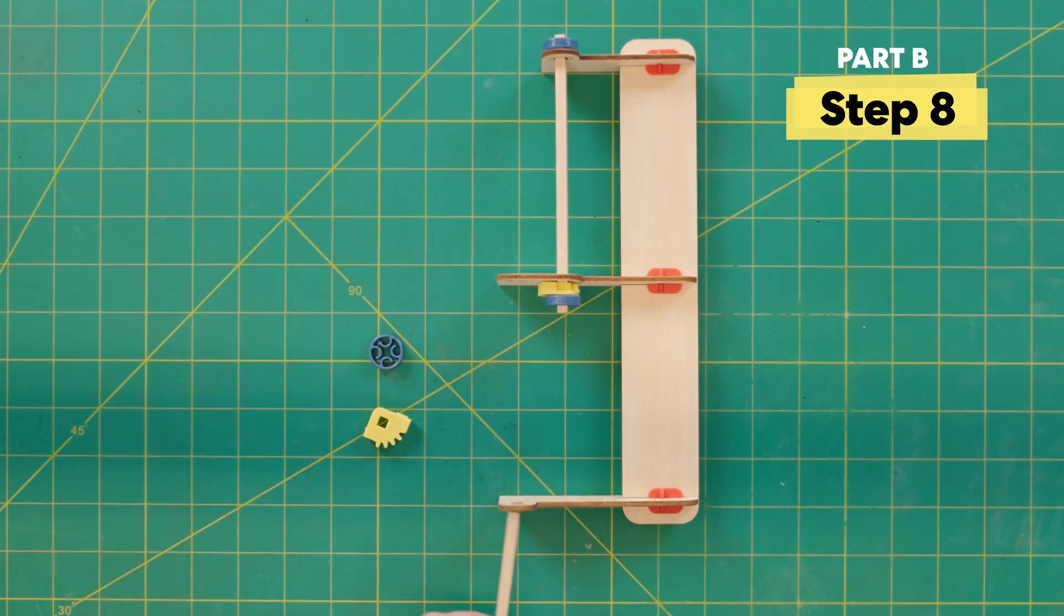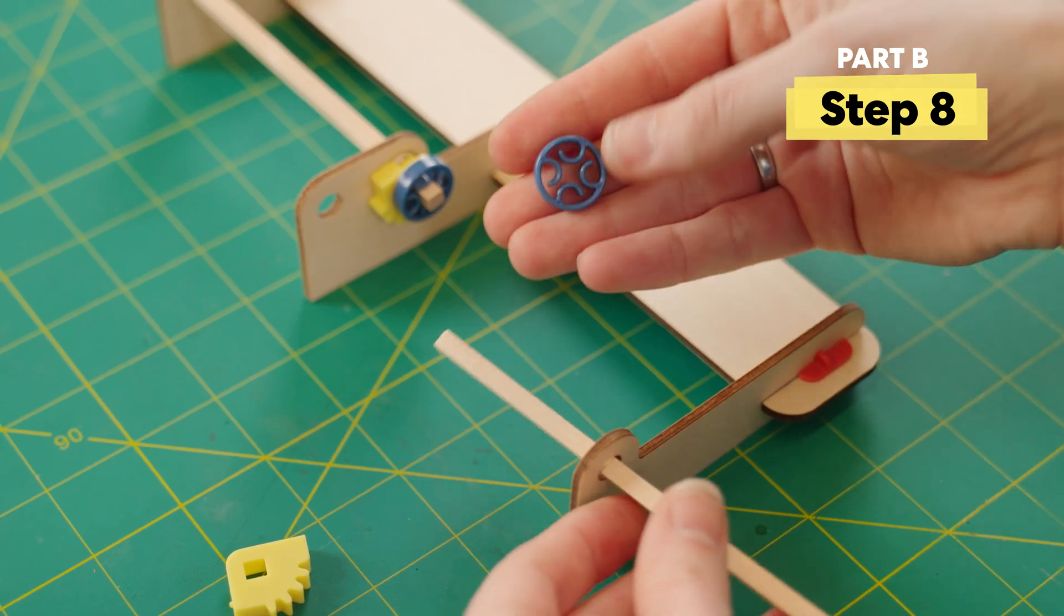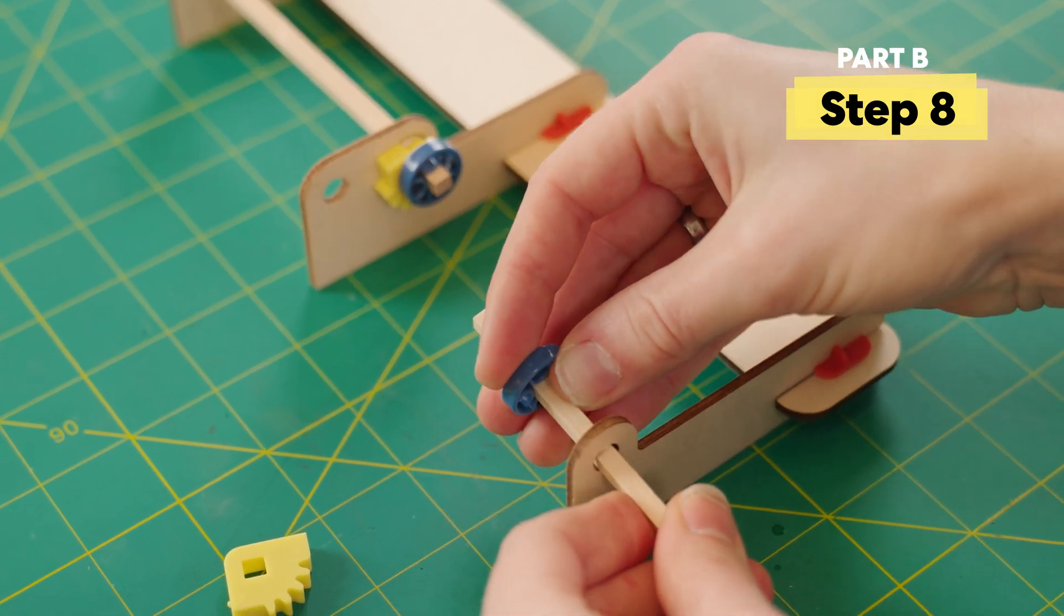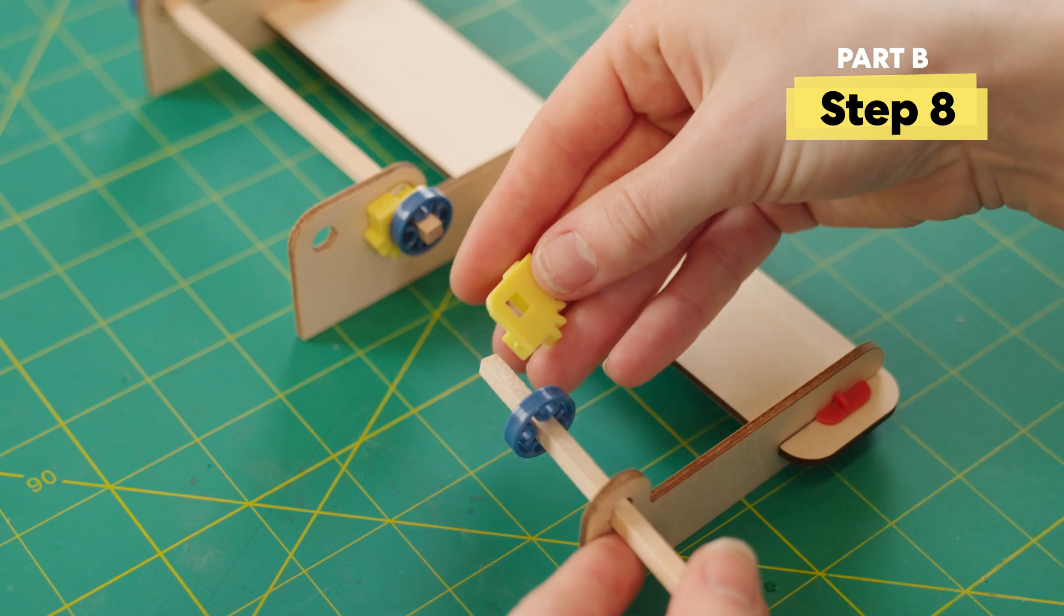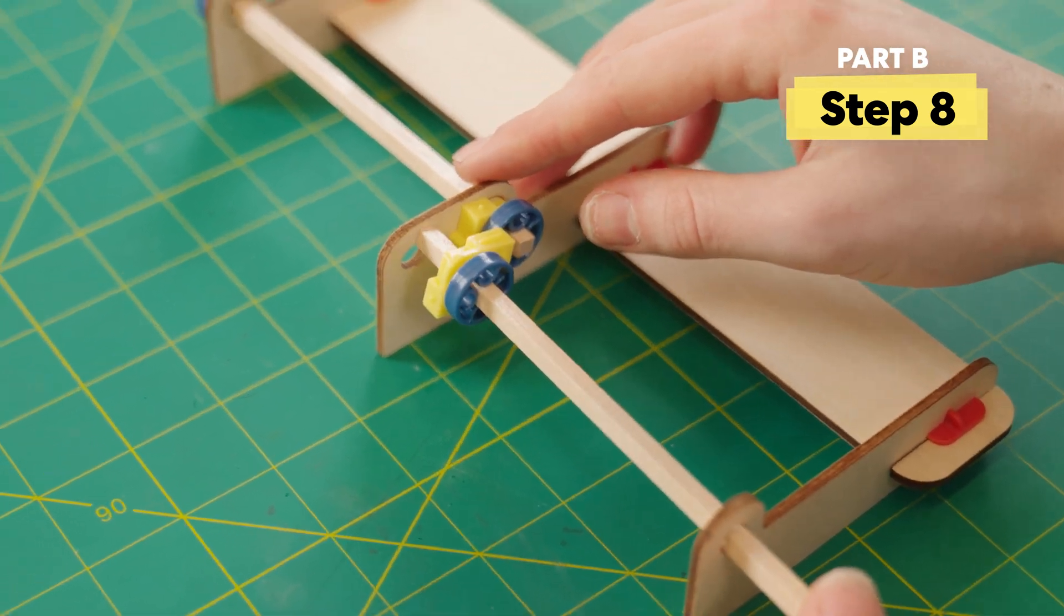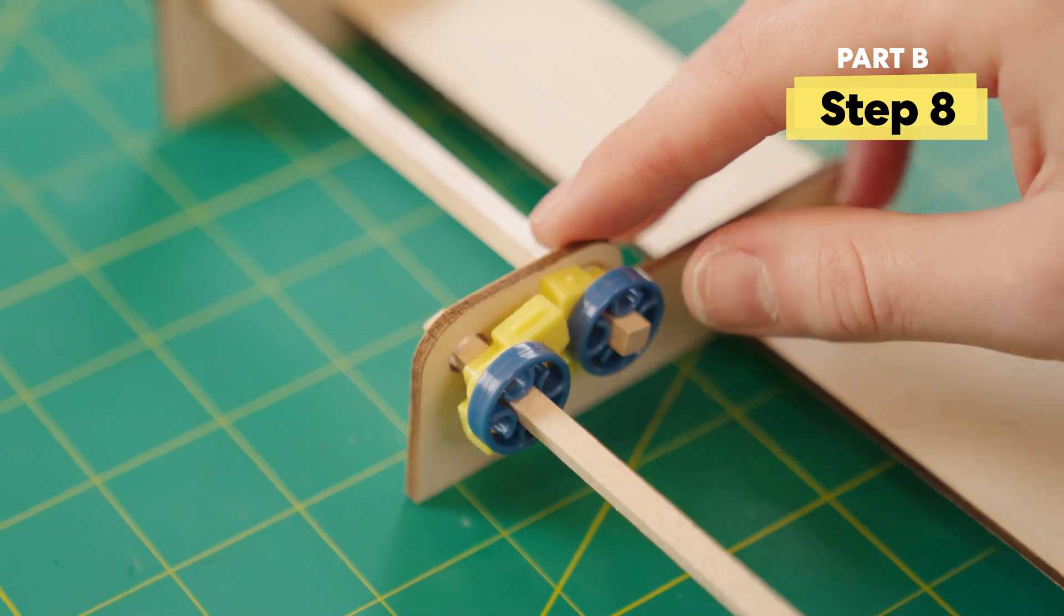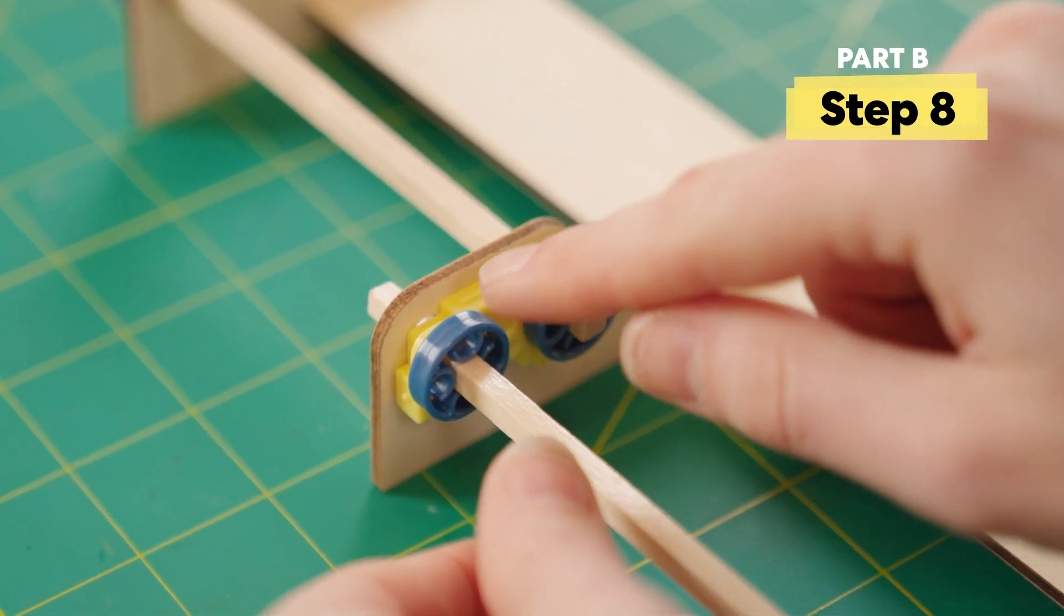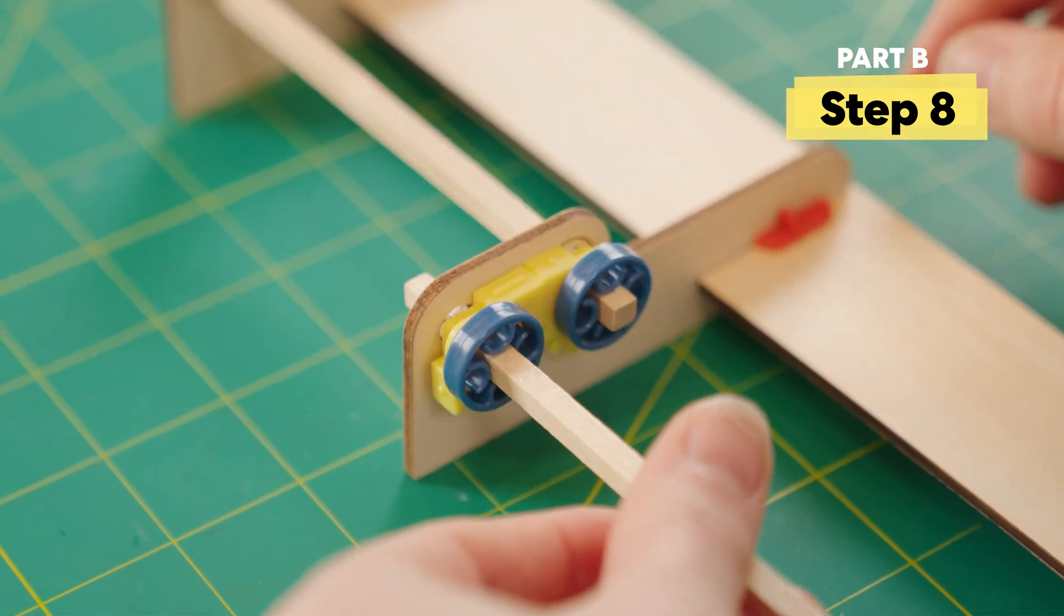Alright, now we're going to put on the other dowel. The order here is really important, so watch closely. First, we're going to put on a blue ring. Then, put on another yellow gear. Make sure that the gear on this dowel are pointing to the right and down. Then you're going to slide the rest of the dowel into the hole, and make sure that those gear teeth mesh. They should turn just like this.